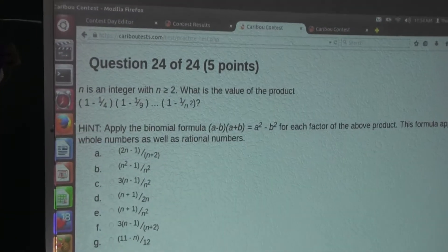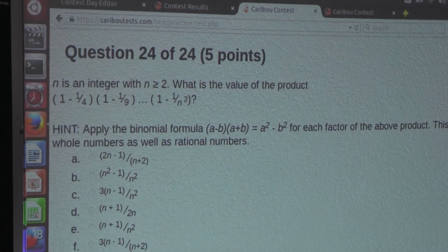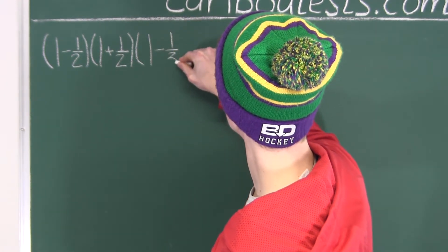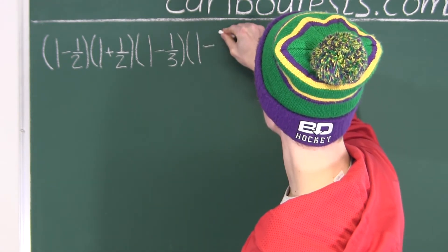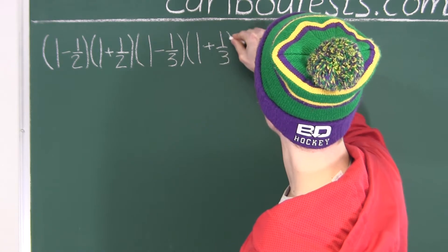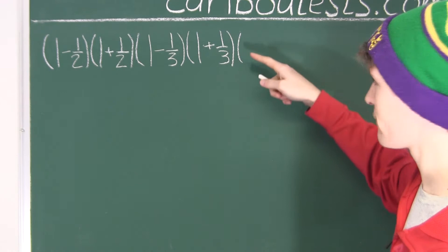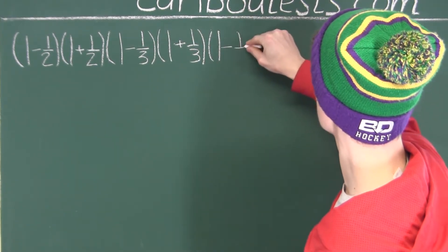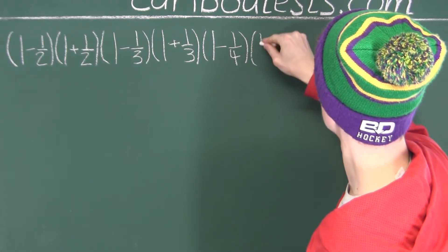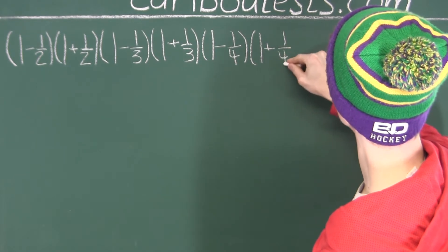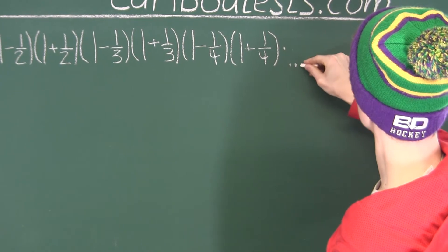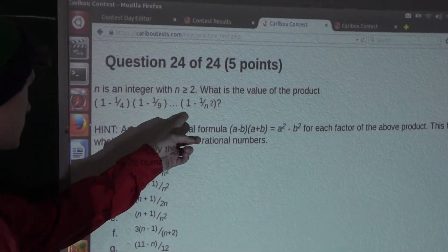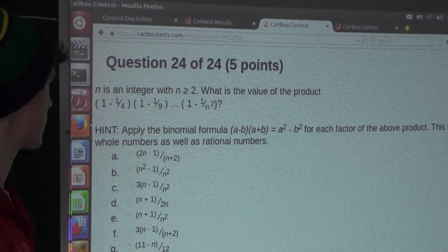Similarly, 1 minus 1 over 9 factors as 1 minus 1 over 3 times 1 plus 1 over 3, since 3 is the square root of 9. And to make it easier, we do one more factorization with the denominator being 1 greater: 1 minus 1 over 4 times 1 plus 1 over 4. Finally, 1 minus 1 over n squared factors as 1 minus 1 over n times 1 plus 1 over n.